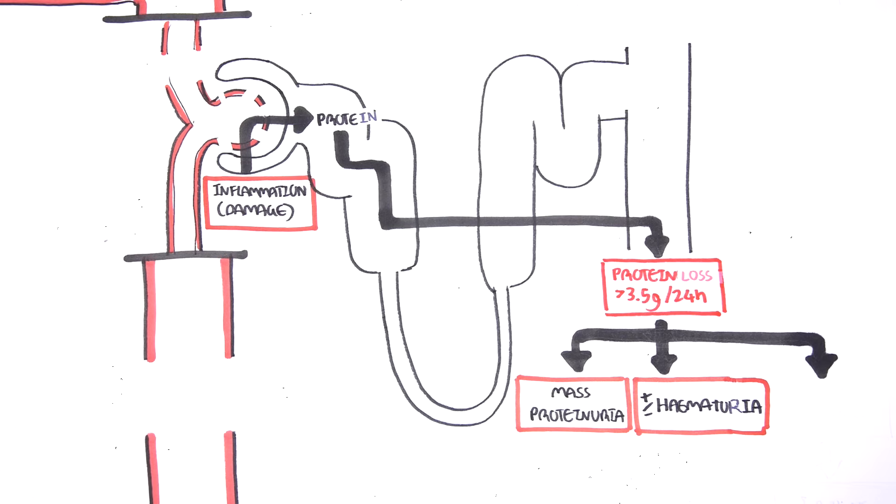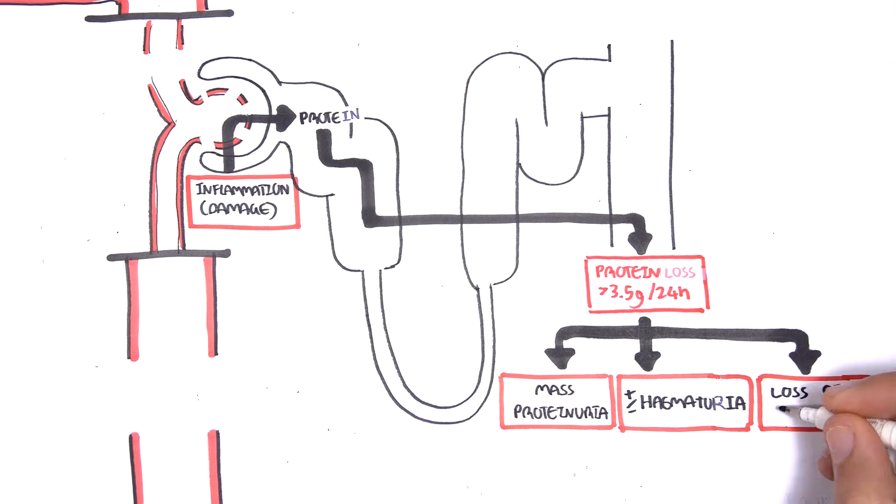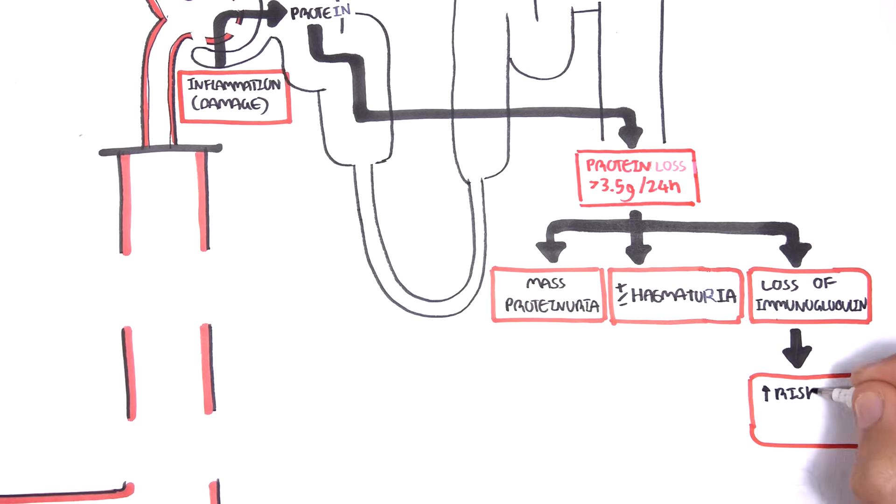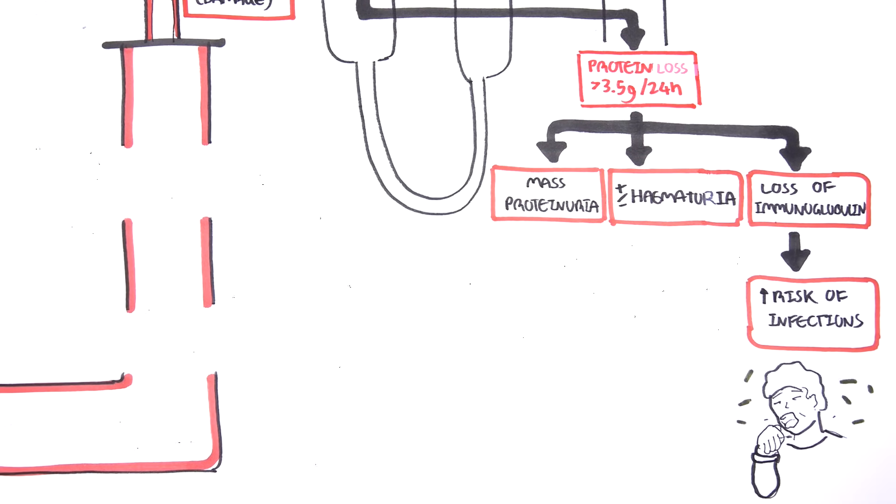The protein loss can also be antibodies, since antibodies are proteins as well. If there is loss of antibodies, the person doesn't have their normal antibody defense mechanism, meaning they are at increased risk of infection.